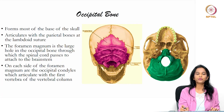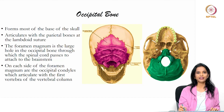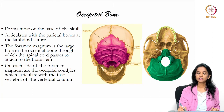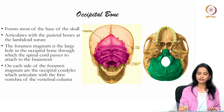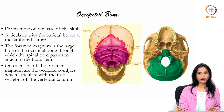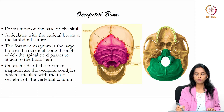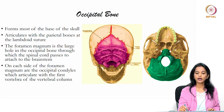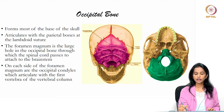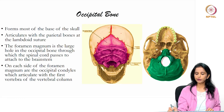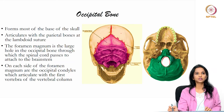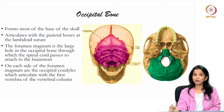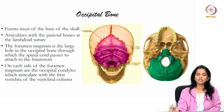Moving on to the occipital bone. The occipital bone forms the base of the skull, as nicely highlighted in the picture. It articulates with the parietal bone at the lambdoid suture — named so because it has a lambda-like appearance. The parietal bones are joined together at the sagittal suture and joined with the occipital bone through the lambdoid suture. Also present in the occipital bone is the large foramen magnum, the largest foramen in the body.